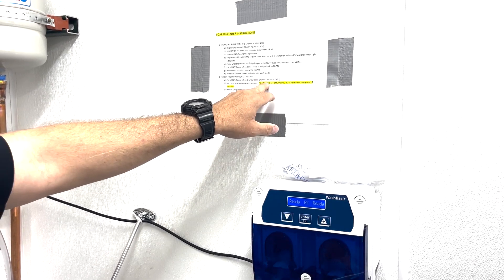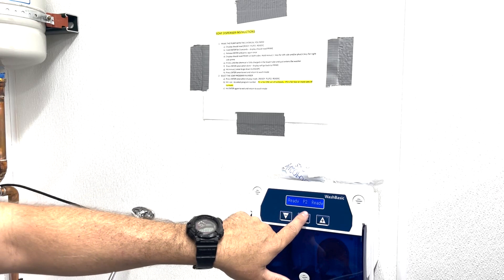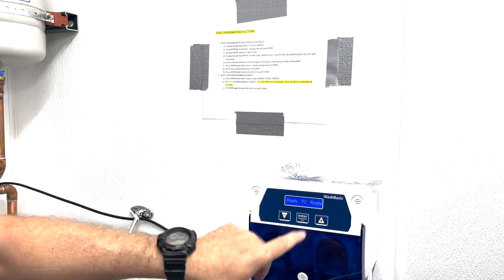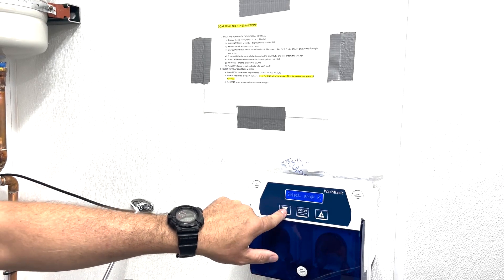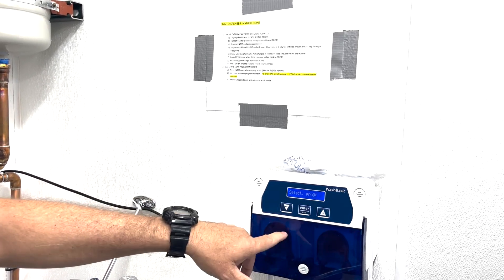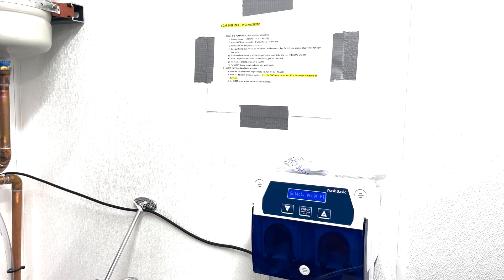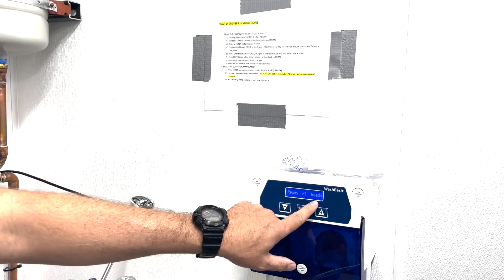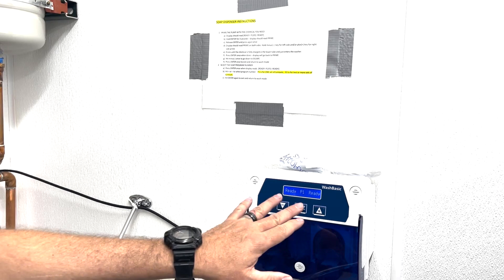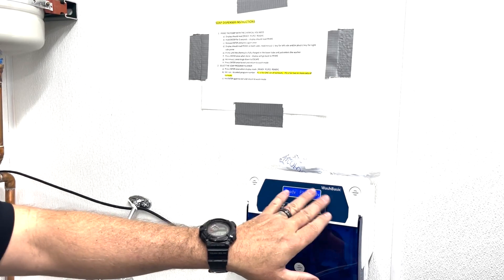Now this pump is ready for program two. Now I need to select the soap number. Press Enter once. The display reads 'Ready P1 or P2.' So instead of holding it, I'm just pressing it once. Then I can select the program number. I just hit the plus or minus button to select program one or program two. Since there's only one set of turnouts in there, I just want program one, and then I'll hit Enter to go back to here.